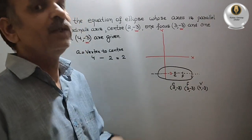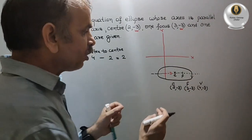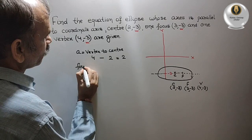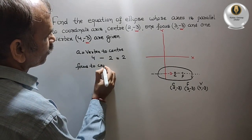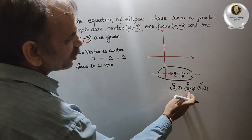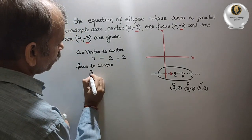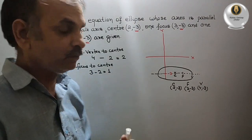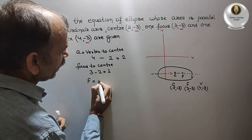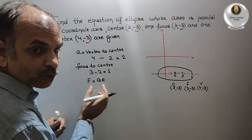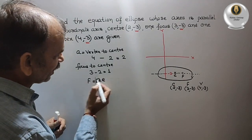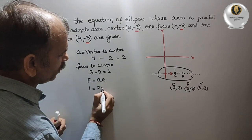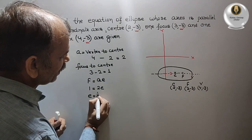Now for the focus: the x-coordinate of the focus is 3, but the distance from the center is 3 minus 2, which equals 1. We know the focus distance equals A·E. So 1 = 2·E, therefore E = 1/2.